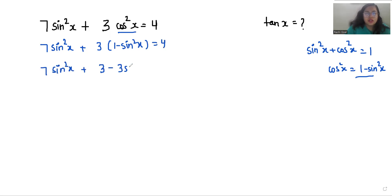Expanding, we get 7 sin²x + 3 - 3 sin²x = 4. Taking 3 to the other side, 7 sin²x - 3 sin²x = 4 - 3, so 4 sin²x = 1, which gives sin²x = 1/4.